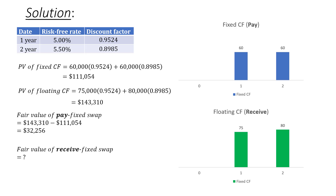What would the fair value be if it had been a receive fixed swap? A receive fixed swap involves receiving cash flows based on the fixed rate and paying cash flows based on the floating rate — the opposite of pay fixed. So we simply swap the signs. The fair value of a receive fixed swap would be negative $32,256, ending our session on calculating the fair value of an interest rate swap.